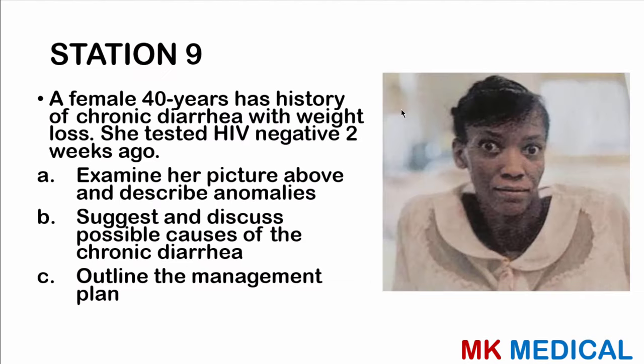Station 9. A 40-year-old female has a history of chronic diarrhea with weight loss. She tested HIV negative two weeks ago. Examine her picture and describe anomalies, suggest and discuss possible causes of chronic diarrhea, and outline the management plan. We're almost towards the end of this video — please hit the subscribe button, like, and drop a comment. Here comes the answer.